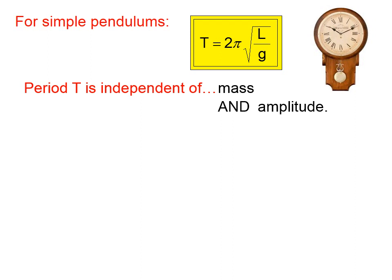The length of the pendulum will affect that time, and the acceleration due to gravity will affect that time. But the mass of the bob is irrelevant. The amplitude is irrelevant.